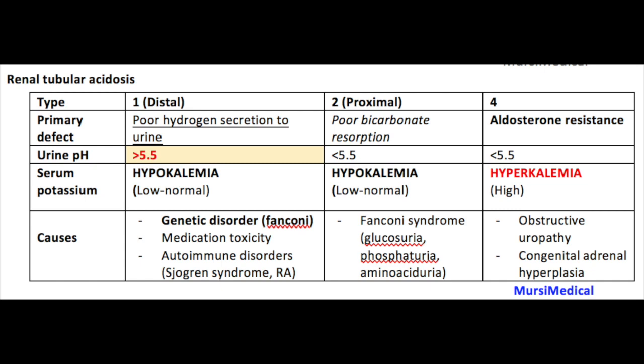So let's go back to what you present with in all three. In all three, you're going to have hyperchloremic non-anion gap metabolic acidosis. In type 1 and type 2, you're going to have hypokalemia. In type 4, you have hyperkalemia because of the lack of aldosterone, which leads to retention of potassium and retention of hydrogen ion, causing the acidosis and the hyperkalemia.